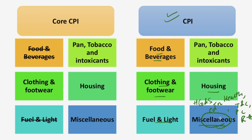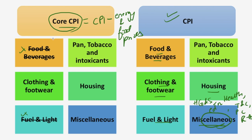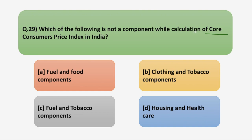Core CPI is also known as CPI minus energy and food prices. Food and beverages and fuel and light are excluded from the calculation of core CPI. The reason is that energy and food prices are removed because they have a tendency to be highly volatile, and including them gives a misleading impression of underlying inflationary pressures. So, moving back to the question, the correct option is Option A — the fuel and food component.